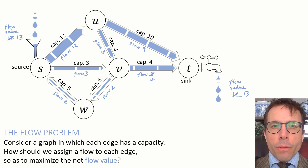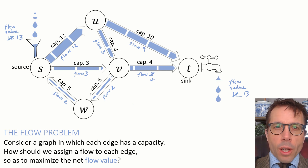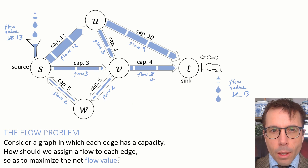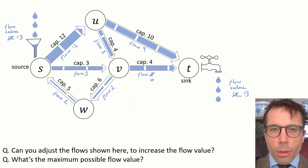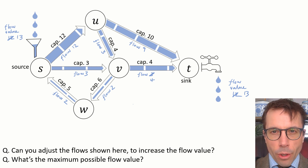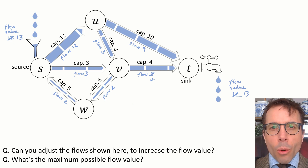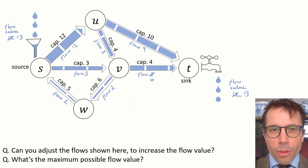Have a look at this graph and see if you can find a way to adjust the flows to get a higher flow value. At first glance, it looks like we're stuck — we're using up all the capacity on both the outgoing pipes from the source, so how could we possibly fit more? But if you think a bit harder, you'll spot a way to increase the flow value. Pause the video and try to answer two questions: first, how can you adjust the flows shown here to get a higher flow value? And second, what's the maximum possible flow value achievable on this network? If you can answer both, you'll have grasped the big ideas behind the next two videos.